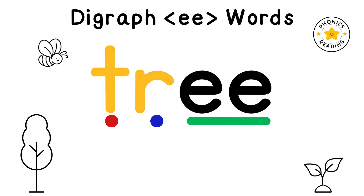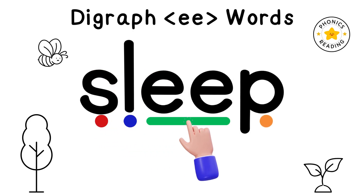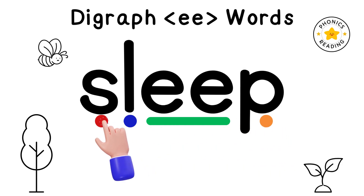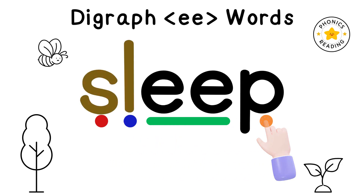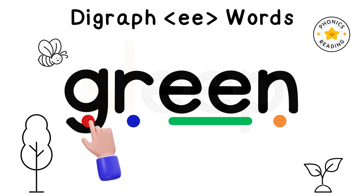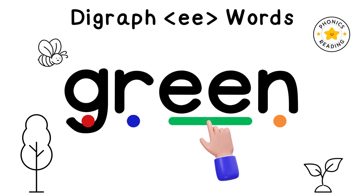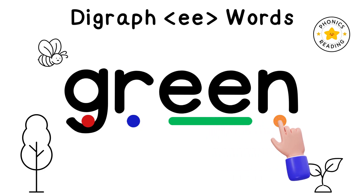Tr is a consonant blend. Sl, E, P. Sleep. Sl is a consonant blend. In a consonant blend, we can hear the sounds clearly. Gr, E, N. Green.